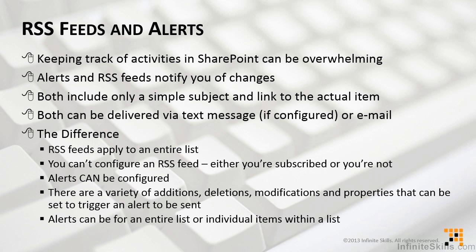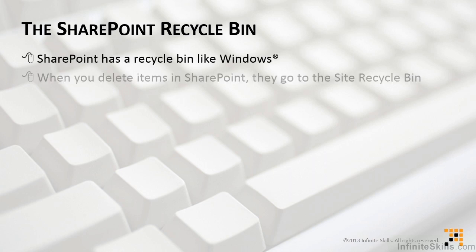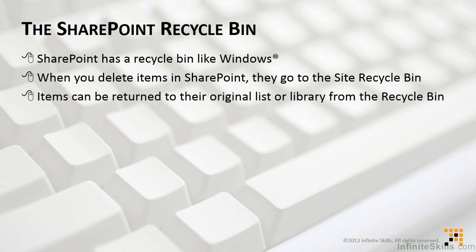In addition, alerts can be set for an entire list or library, or just for an individual item that you're interested in, and not the entire list or library. We'll see all of these different options when we actually create an alert in another video. The last thing we need to talk about is the SharePoint recycle bin. SharePoint does have a recycle bin, and it's just like the one in Windows. When you delete items in SharePoint, no matter what the item is, they go to the site recycle bin. Also, items can be returned to their original list or library from the recycle bin. So if you accidentally delete something, you can go pull it out of the trash and put it back where you need to use it. This takes away some of the fear of working within SharePoint.